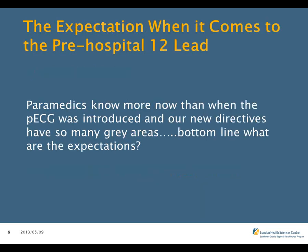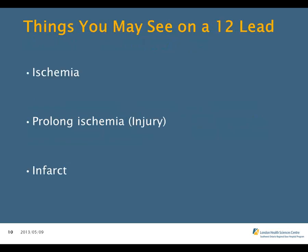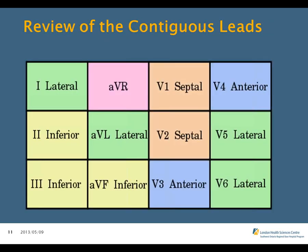A frequently asked question is: paramedics know more now about the pre-hospital ECG than when it was first introduced, and our new directives have gray areas — what are the expectations? On the ECG, signs of ischemia present as ST depression or T-wave inversion. Prolonged ischemia presents as injury — ST elevation — as well as infarction with pathological Q waves. The bottom line is you will perform 12-lead ECGs when indicated, and you will activate the STEMI protocol when required.